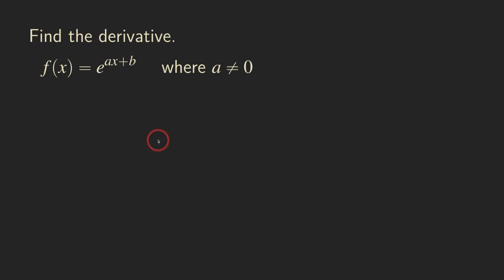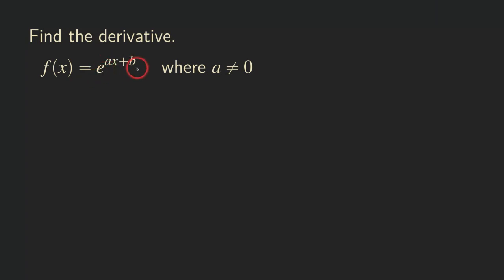Hello everyone, it's Wilson here. Today I want to talk about finding the derivative of a function of the form e to the ax plus b. We require a to be non-zero, because if a is zero, then you have e to the b, and since b is a constant, you would just be getting a constant. And when we differentiate a constant, we get zero.